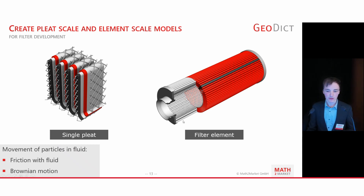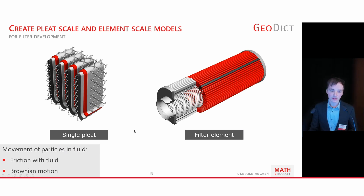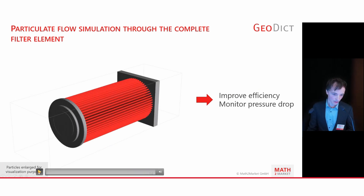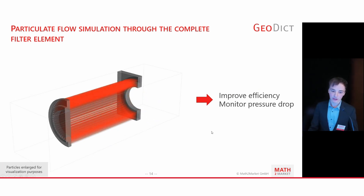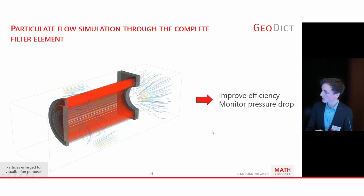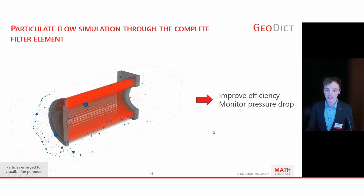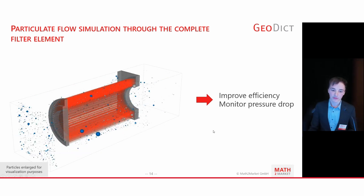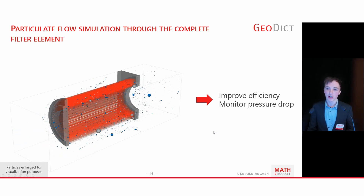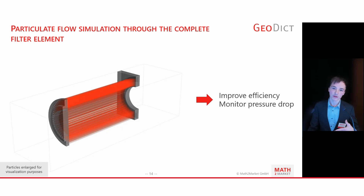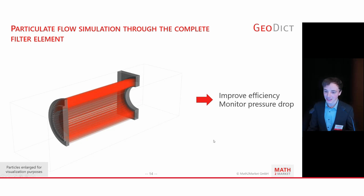With a focus on single pleats and filter elements, we model the particle distribution and filtration efficiency based on the structure. We also have a video showing how a filtration process works. First, you see a flow field, and based on that fluid flow velocity field, you can inject particles, which are then filtered by the filter element. You can then derive the pressure drop induced by these particles, from which you can derive the filter lifetime — the higher the pressure drop, the worse the filter performance.